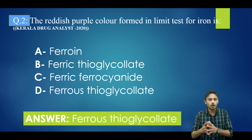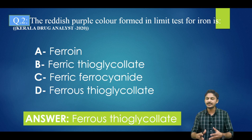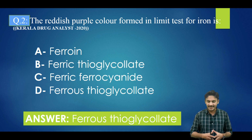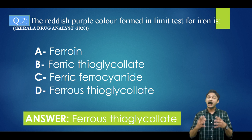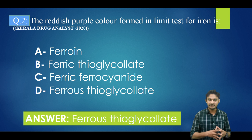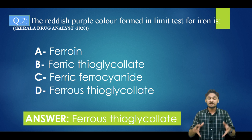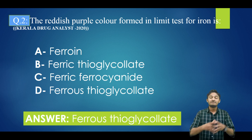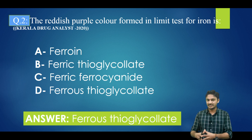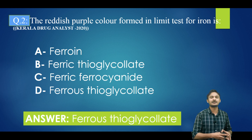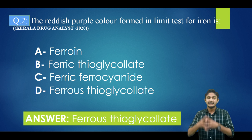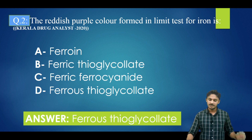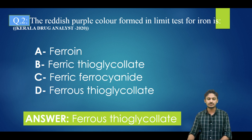The iron limit test is based on the reaction between iron and thioglycolic acid in the presence of citric acid and in an ammoniacal alkaline medium. The reaction between iron and thioglycolic acid gives ferrous thioglycolate, which has a reddish purple color.